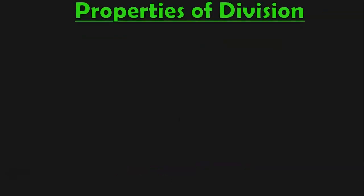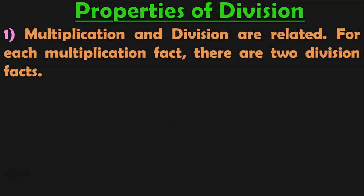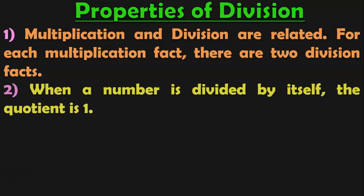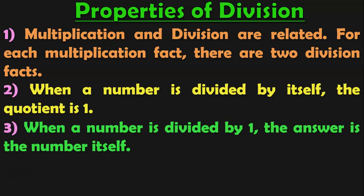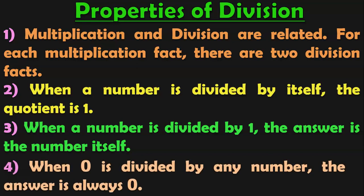Let us quickly summarize the properties of division. First: multiplication and division are related — for each multiplication fact, there are two division facts. Second: when a number is divided by itself, the quotient is 1. Third: when a number is divided by 1, the answer is the number itself. Fourth: when 0 is divided by any number, the answer or quotient is always 0.